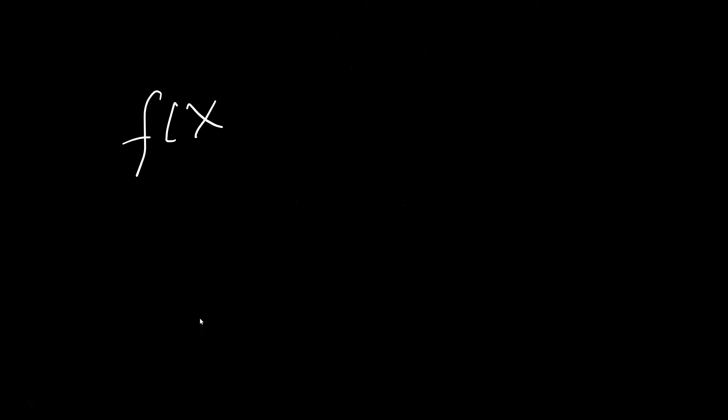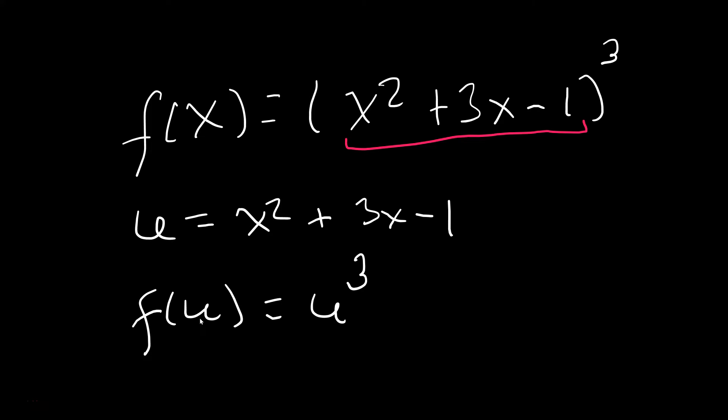Now, often we do this instead. We write f of x equals x squared plus 3x minus 1, and you cube it. But then, we call the inside u. So u is x squared plus 3x minus 1. We give it a name. That means then we write the outside as f of u is equal to just u cubed, because the u plays the role of the x squared plus 3x minus 1.